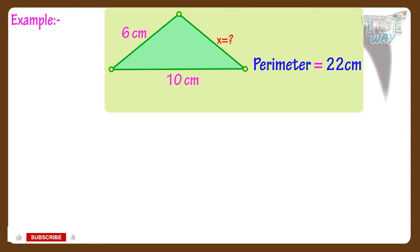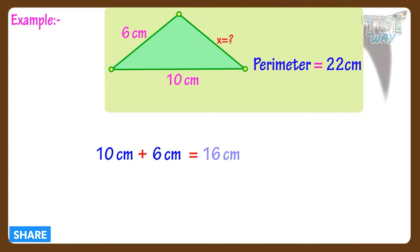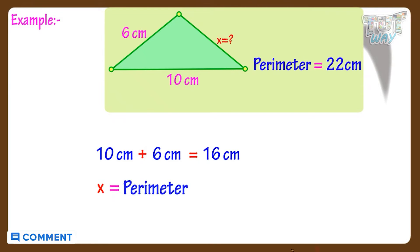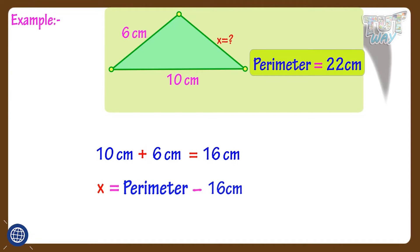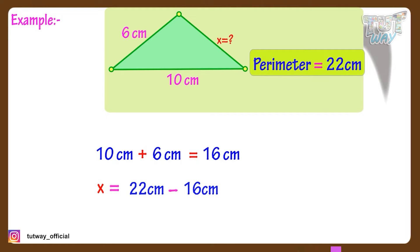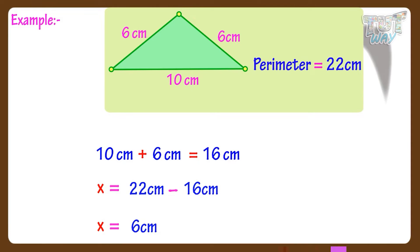The sum of the other two sides is 10 centimeters plus 6 centimeters, which equals 16 centimeters. So the length of the third side equals perimeter minus 16 centimeters, where perimeter equals 22 centimeters. So the length of the third side is 6 centimeters.